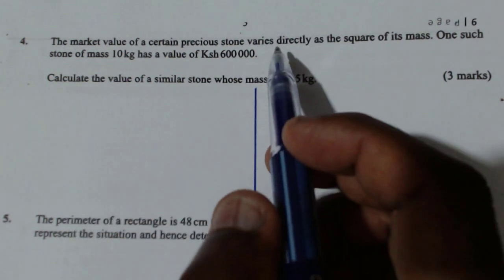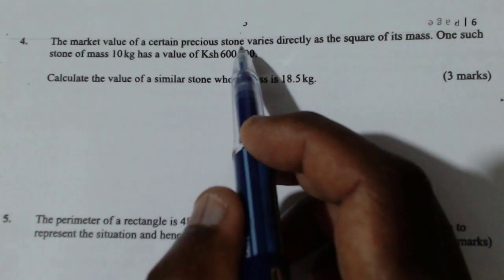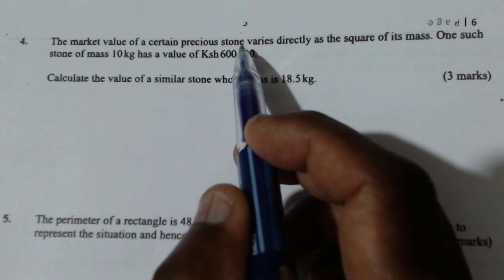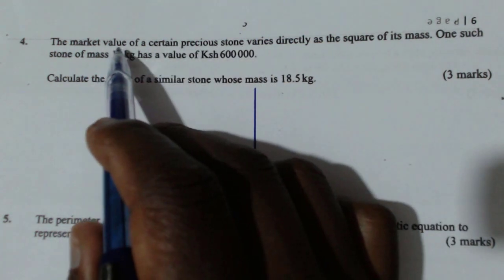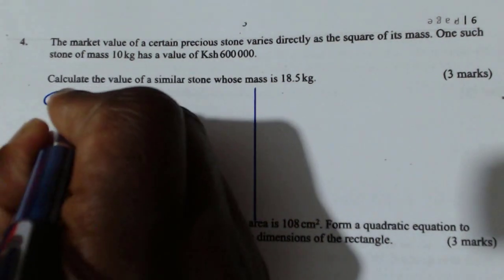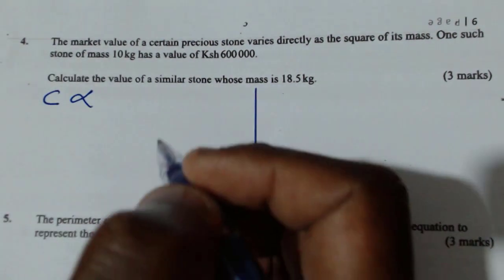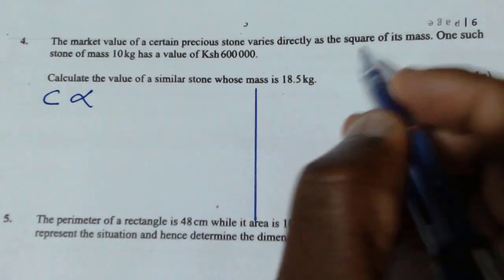So when you read this question, you notice that this is direct variation. The cost of this stone varies directly as the square of its mass.